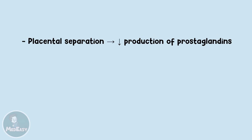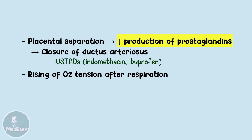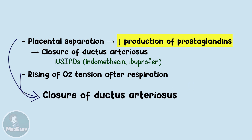Placental separation leads to decreased production of prostaglandins. This decrease is important for ductus arteriosus closure, which is why agents that inhibit the production of prostaglandins like NSAIDs — for example indomethacin or ibuprofen — are used clinically to induce closure of ductus arteriosus, especially in preterm infants. This, in addition to the rising oxygen tension when the baby begins to breathe, is what leads to the ductus arteriosus being obliterated and forming the ligamentum arteriosum.